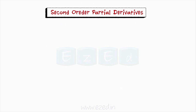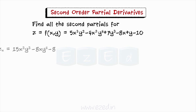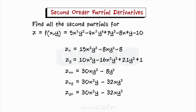Let us look at an example. Find all the second partials for z equals f, which equals 5x cubed y squared minus 4x squared y to the fourth plus 7y cubed minus 8x plus y minus 10. First we must find the first partial derivatives, then find all four second partials. Notice that z sub xy and z sub yx give the same answer — they should always be the same for any problem we work.